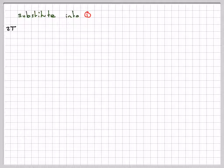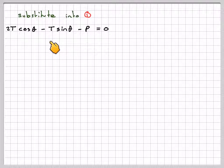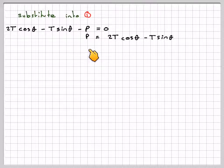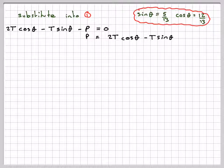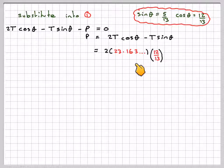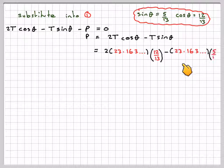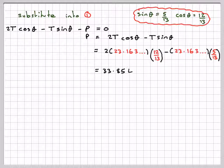Substitute into equation 1. So 2T cos θ minus T sin θ minus P equals 0. We want to find P, so P is going to be 2T cos θ minus T sin θ. Remembering that sin θ is 5 over 13, cos θ is 12 over 13, so substituting in 2 times my value of T, 23.163, times cos θ, which is 12 over 13, minus 23.163 times 5 over 13, which gives me 33.854, so it's 33.9 Newtons.